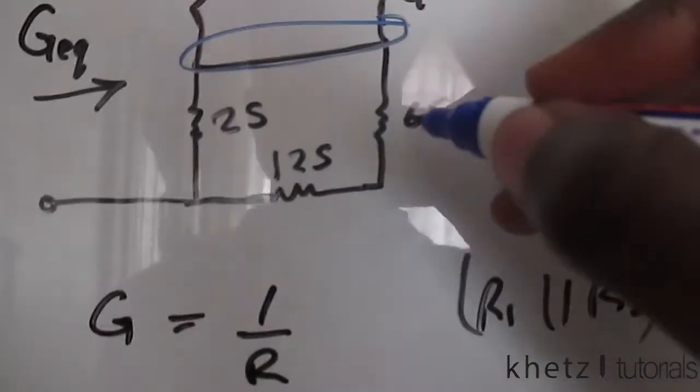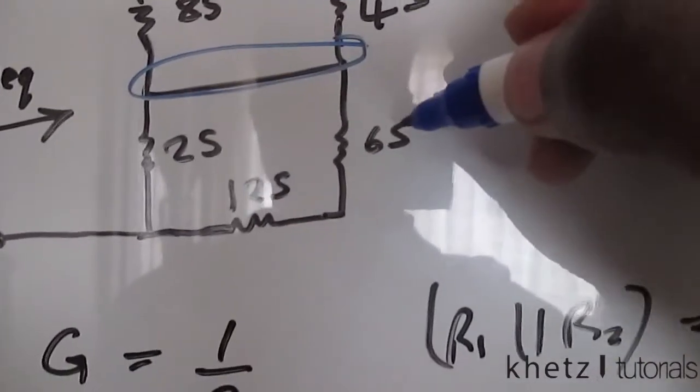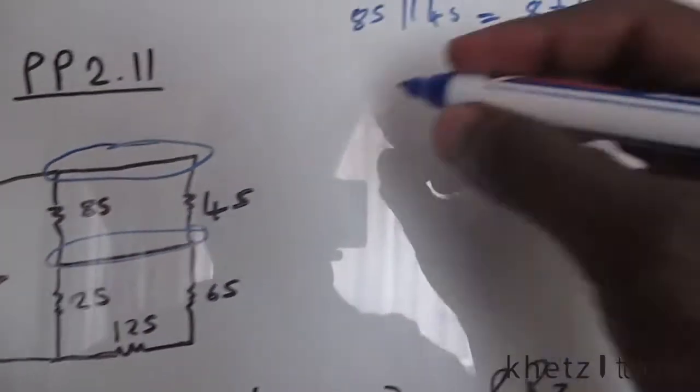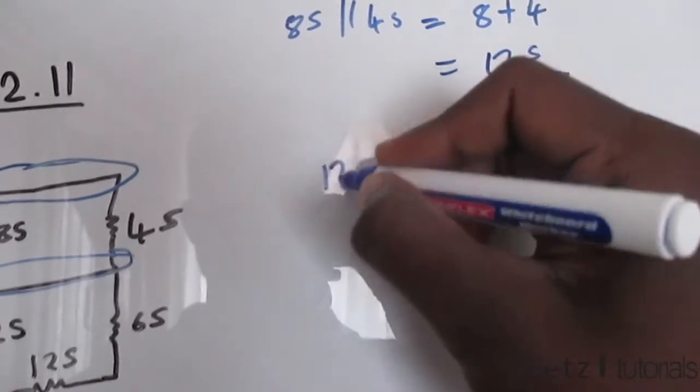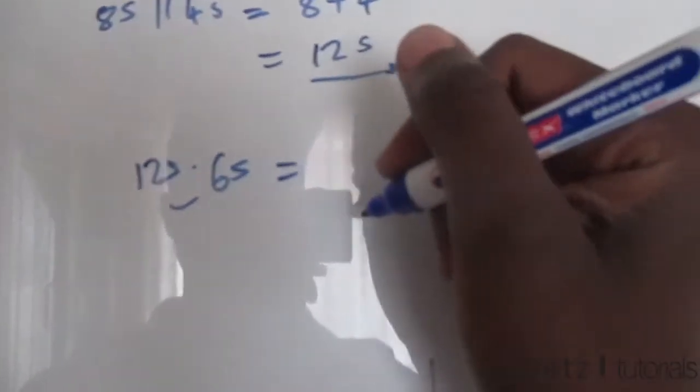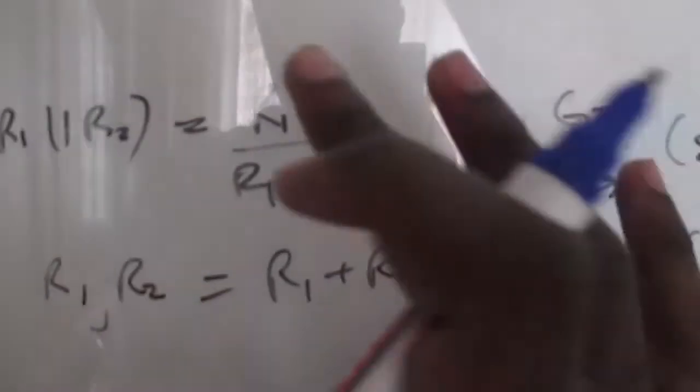And moving down here, we have six Siemens in series with 12 Siemens. So 12 Siemens in series with six Siemens. We give us, we apply this formula now, this formula here. We have series conductances.